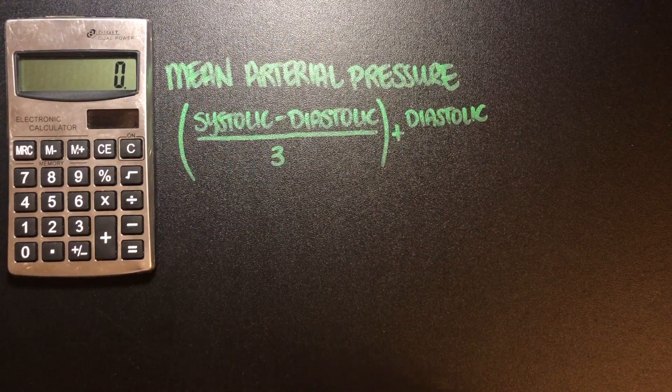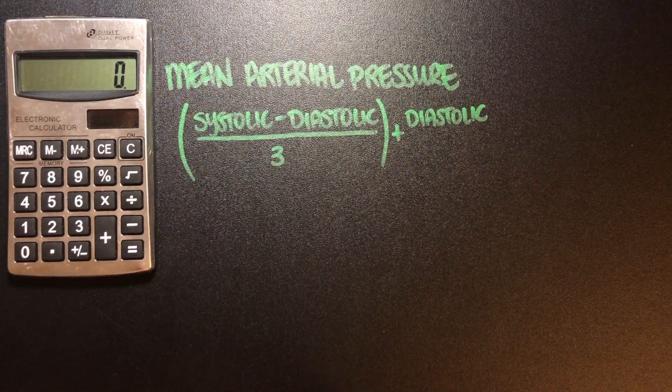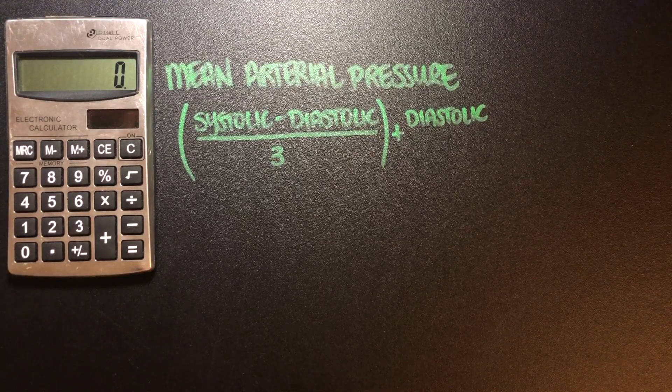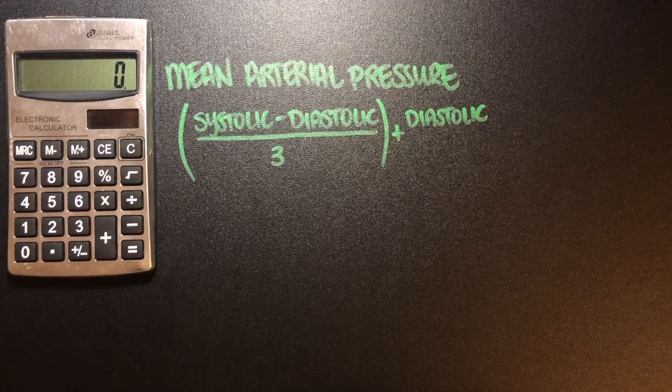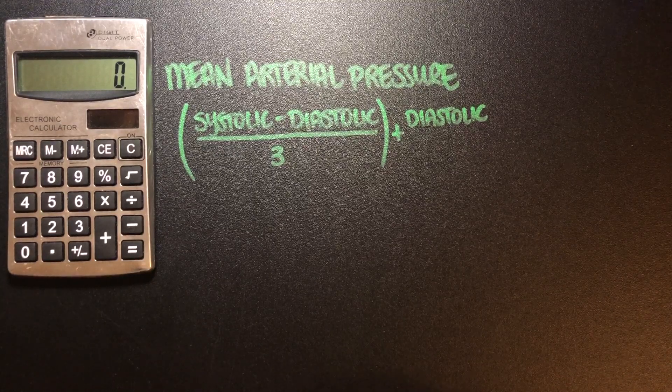Let's take a look at mean arterial pressure or MAP. Mean arterial pressure is going to summarize the average arterial pressure during one cardiac cycle, so one heartbeat.